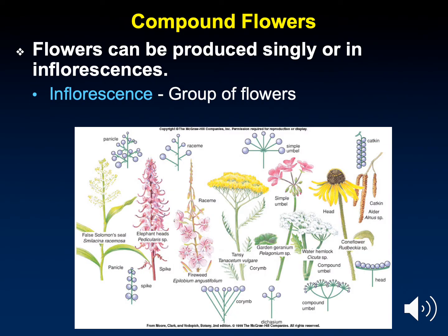What we just learned about is the description of a simple flower. But just like leaves, flowers can be compound — essentially a structure made of multiple flowers. A group of flowers is called an inflorescence, and they can take many different formations. In the center top of the illustration you'll see a simple umbel, an umbrella-like shape characteristic of the carrot family. There is also the catkin formation, seen in several species of tree. Many flowers in the aster family, like sunflowers, daisies, and mums, are compound flowers as well.